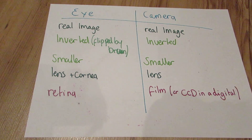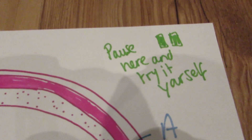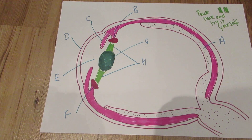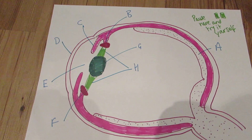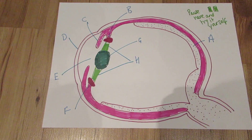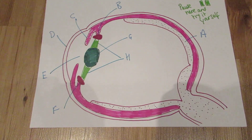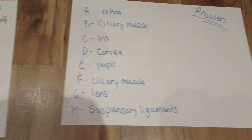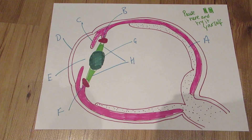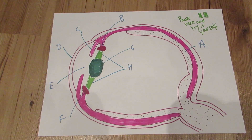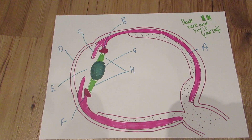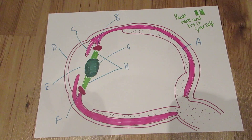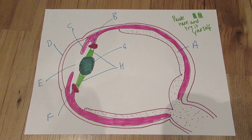What I want you to do now is pause and try to name the parts of the eye for yourself — the same image as before with parts labelled A through to H. Once you've done that, here are the answers: A is the retina, B are the ciliary muscles, C is the iris, D is the cornea, E is the pupil, F is the ciliary muscle again, G is the lens, and H is the suspensory ligaments.